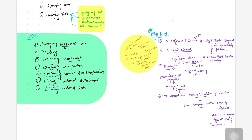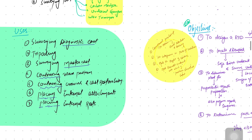From the exam point of view, the uses and objectives of an instrument are the most important. The uses of surveying are: first, surveying of the diagnostic cast; then tripoding; then surveying of the master cast; then contouring of the wax pattern; then contouring crowns and cast restorations; then locating and replacing internal attachments; and placing the internal rest.